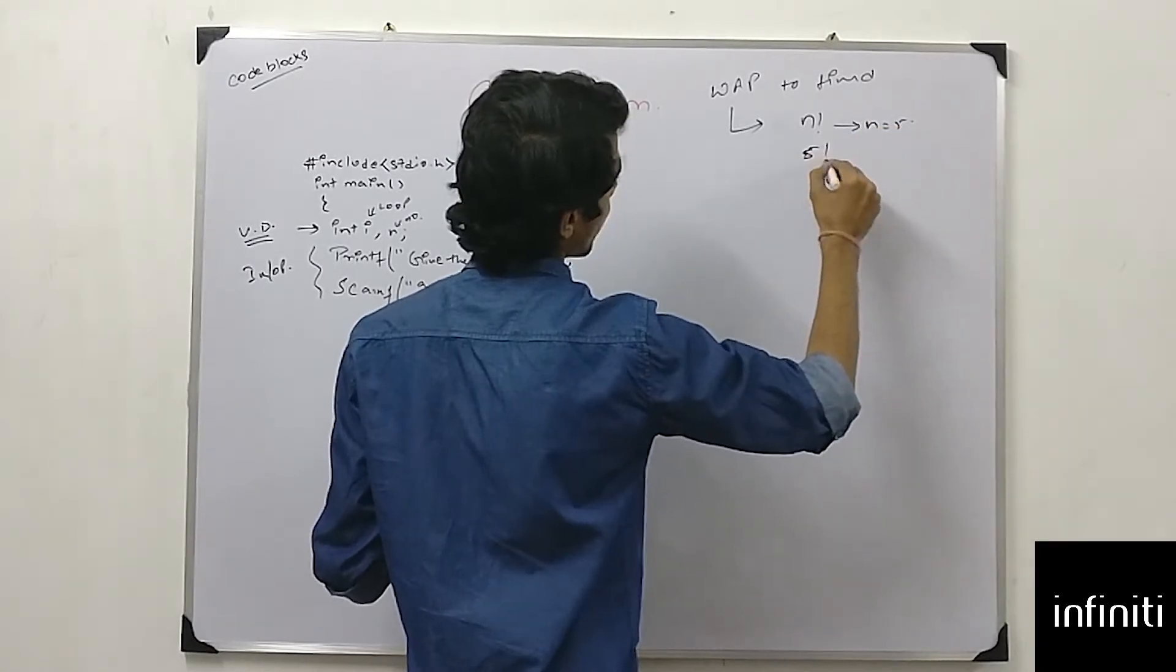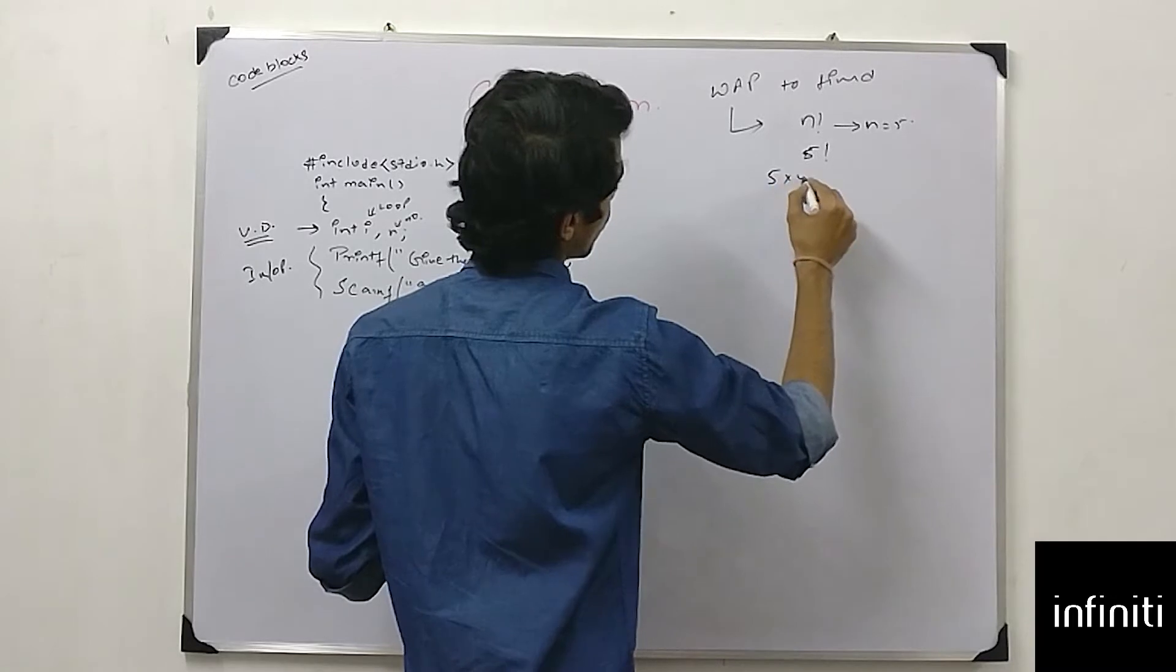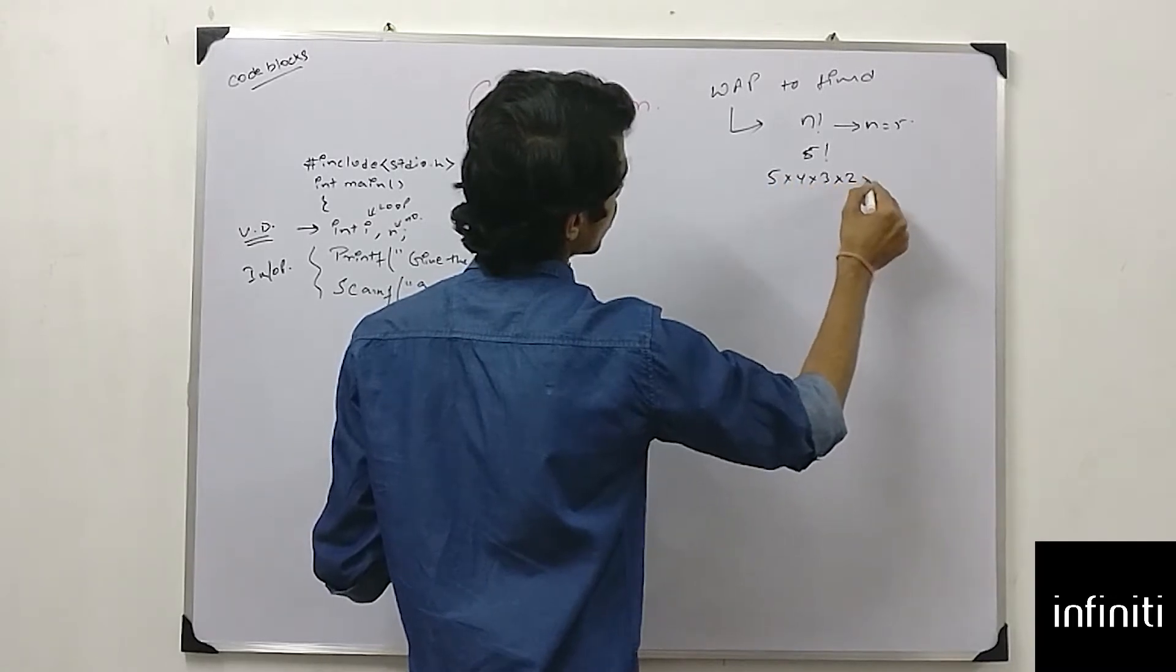So I have to find the factorial of 5 which is 5 into 4 into 3 into 2 into 1.